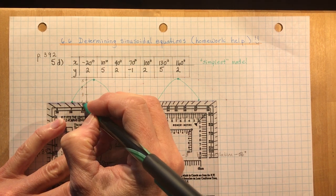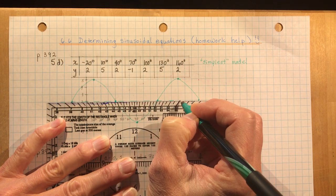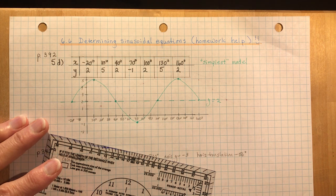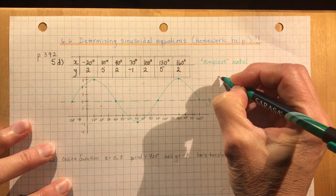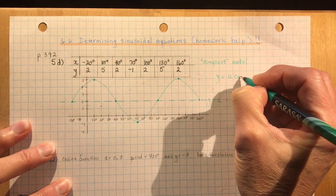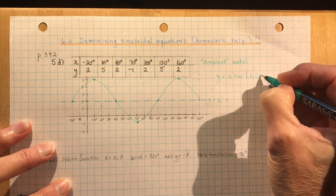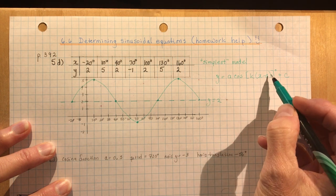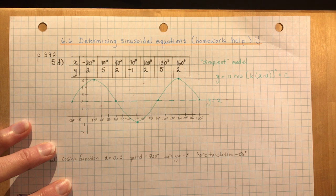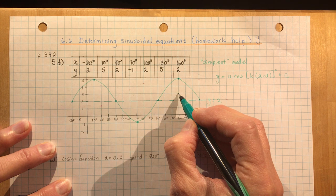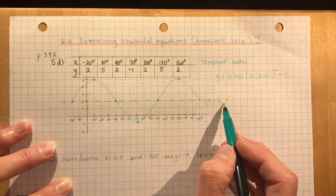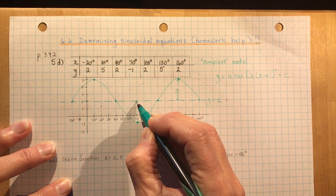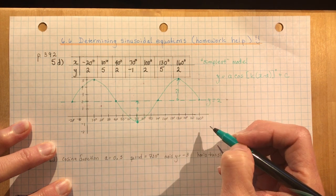You can tell from the data that the axis is going to be 2, because it keeps returning from a peak to 2 and a trough to 2, so y = 2. The equation is y = a·cos(kx − d) + c. My c is 2. For the amplitude, I subtract the axis from the peak: 5 − 2 = 3, so the amplitude a = 3. It's the same going down — 3 units — because the graph is symmetrical.